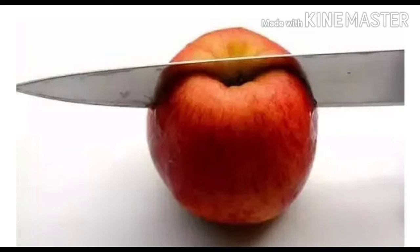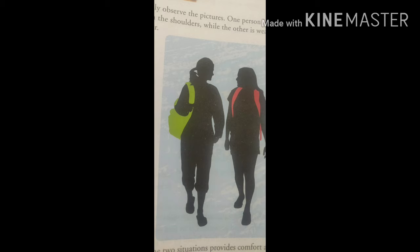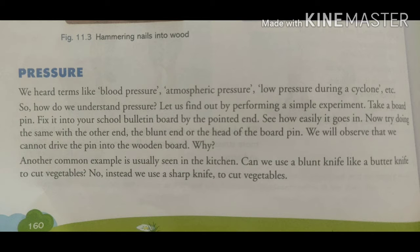While cutting a vegetable, we are applying pressure. And it's easier to cut fruits or vegetables with a sharp knife than with a blunt knife. Why? Have you ever thought? In our school bags, we have wide straps or thick straps, shoulder straps. Why is it so? Or if on a bulletin board when you are fixing a pin, what happens? The pointed end of the pin easily goes in but the blunt end of the board pin does not easily go in. Why is it so?